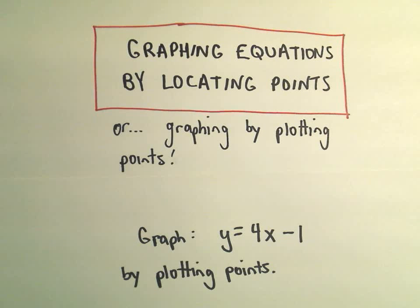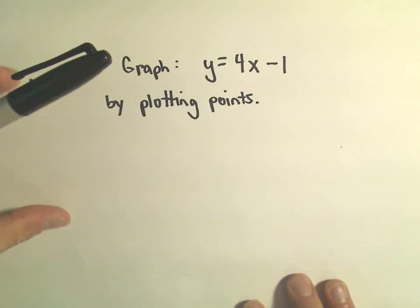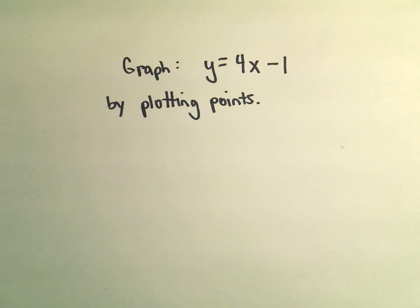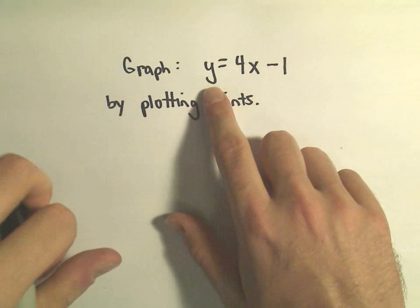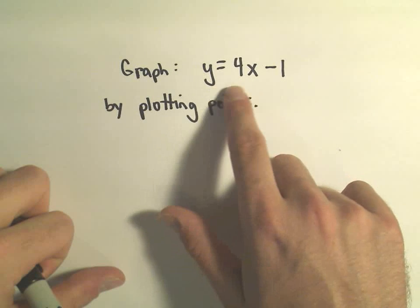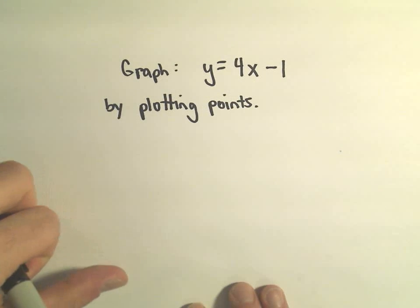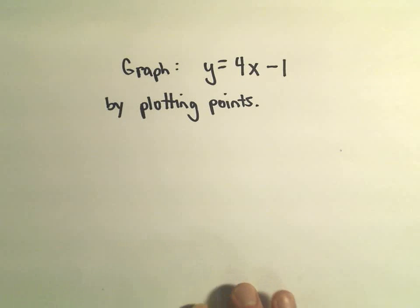In this video I'm going to graph the equation y equals 4x minus 1 by plotting points. It turns out down the road you'll see this — if you have a problem just involving y to the first power, x to the first power, and some numbers, this is going to turn out to just make a straight line when you graph it.